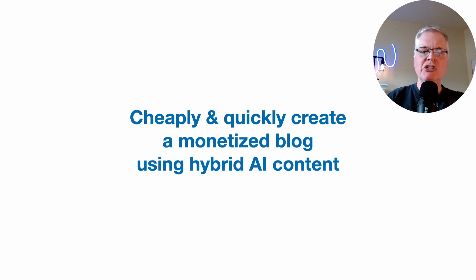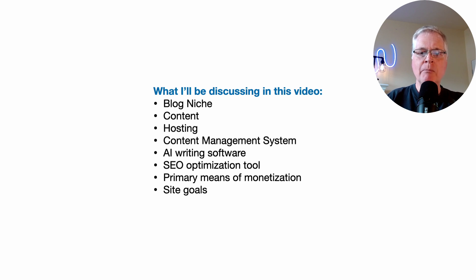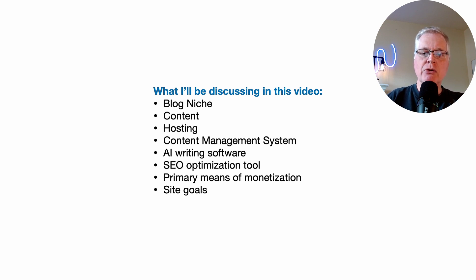The title of this is 'Cheaply and Quickly Create a Monetized Blog Using Hybrid AI Content.' In this video I'm going to discuss the blog niche I've chosen, how I'm going to get content, where I'm going to host this blog, the content management system I'll use for editing AI content, the AI writing software I plan to use, the SEO optimization tools, my initial primary means of monetization, and ultimately what the site goals are.